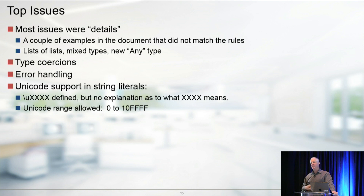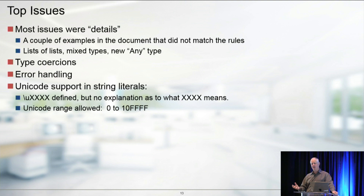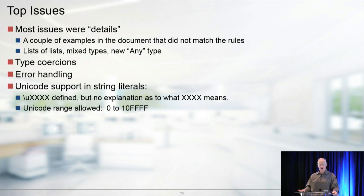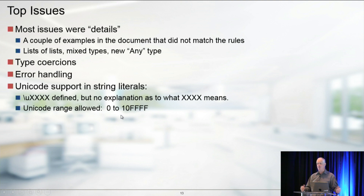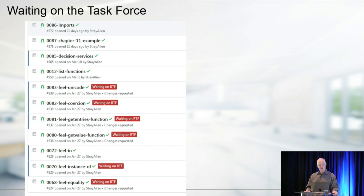He ran into some interesting issues - a lot around type conversions, null support - is null a type or is it not? How do you compare things? Nested lists was also an interesting issue. What this highlighted was that in some cases the spec had examples that were not correct, so that went into the RTF. The RTF has corrected those examples. There were also some interesting Unicode cases - the spec had an expression for including Unicode values, but didn't really define what the four hex digits meant, which was strange because Unicode characters allow more than four digits.